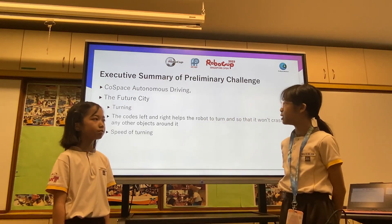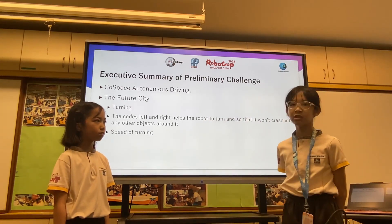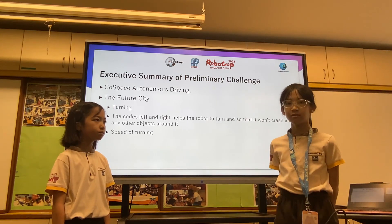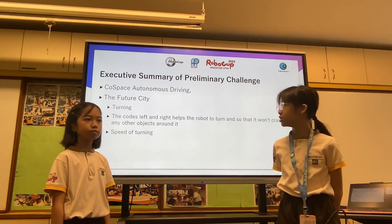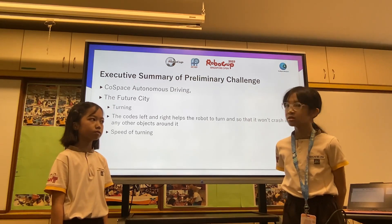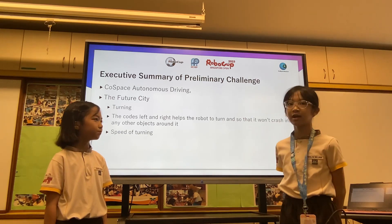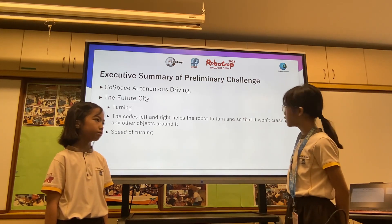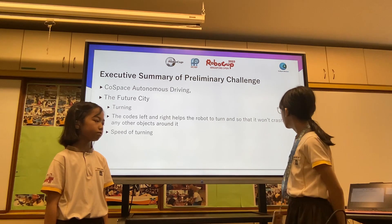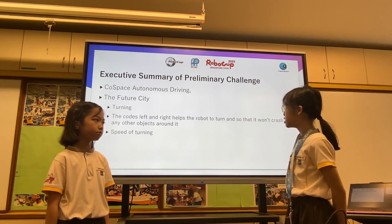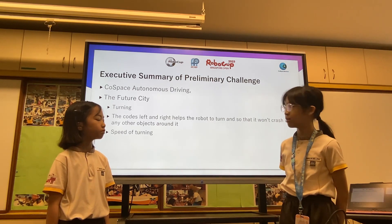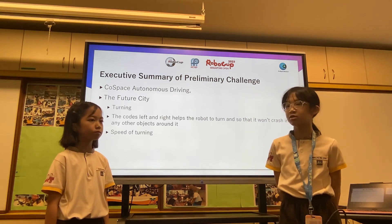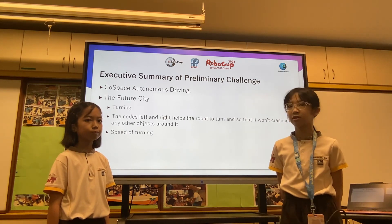We are participating in Cold Space Optimus Driving, the future city. We are focusing on turning, so the codes left and right help the robot to turn so that it won't crash into any other objects surrounding it. We also need to control the speed of the turning.